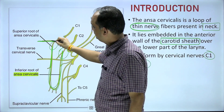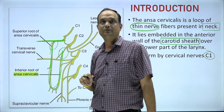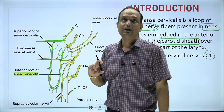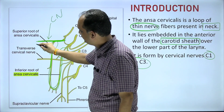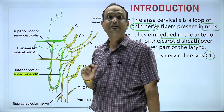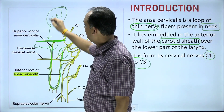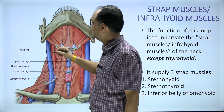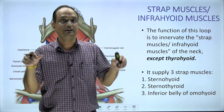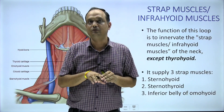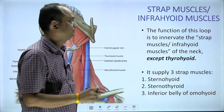The hypoglossal nerve is the 12th cranial nerve. It looks like the loop is coming from it, but actually the hypoglossal nerve carries two sets of fibers — one set of cranial nerve fibers and one set from C1. Some students are confused about how cervical nerve fibers become part of the hypoglossal nerve. What actually happens is that there is a merging of the two nerves, which we will see in the coming slides.